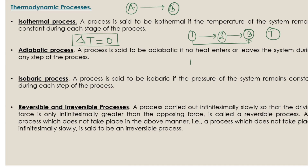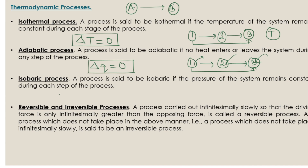Next is the adiabatic process. In an adiabatic process, when we change a system from one state to another, throughout the process no heat leaves the system to the surroundings, and no heat is absorbed by the system from the surroundings. The heat of the system remains unchanged — no heat flows in or out. Such a process is known as an adiabatic process, where delta Q equals zero.